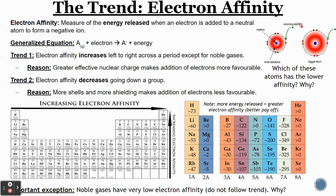Would noble gases really want to receive an electron? Would they really be happy about that? Probably not, because they already have a full valence shell — they don't need it anymore. But something like fluorine is pretty happy to receive an electron, and it would have a high affinity because it just needs one more to complete its valence shell.